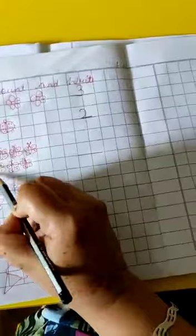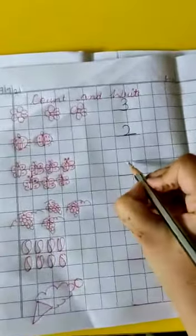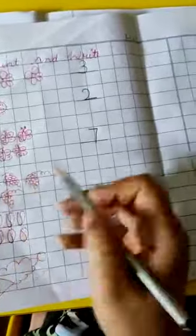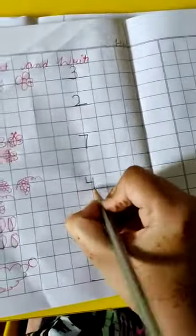1, 2, 3, 4, 5, 6, 7 - there are 7 butterflies, write down number 7 here. 1, 2, 3, 4 - there are 4 grapes, write down number 4 here.